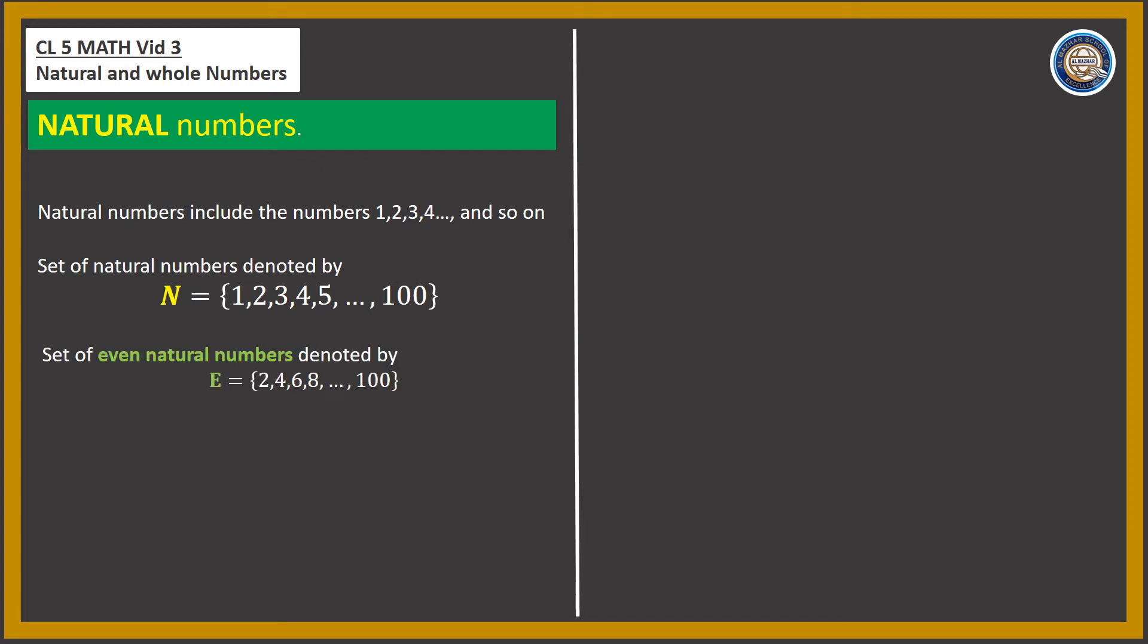If we take even natural numbers, we represent them with E, and we write all the even numbers in it. For example, if we look at even numbers up to 100, we show them like this: E = {2, 4, 6, 8, 10, ..., 100}, using ellipses in between.